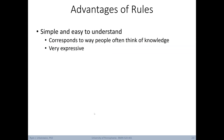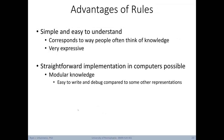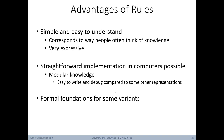The advantages of rules as a representation: they're simple, easy to understand, and naturally correspond to the way people think about knowledge. They're very expressive. Rules are straightforward to implement in computers and allow for modularization of knowledge — an engineer can focus on the validity of individual rules one at a time. Rule-based systems are easier to write and debug compared to other representations. There are also some formal foundations with respect to inference for certain variants, though the more creative the rule base, the farther from a formal system.